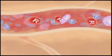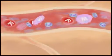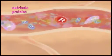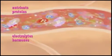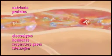Besides the red and white blood cells and platelets, plasma also carries other substances like nutrients, proteins, electrolytes, hormones, respiratory gases, and fibrinogen, which is used to clot blood.